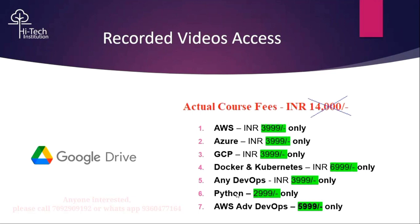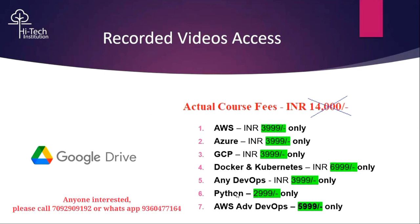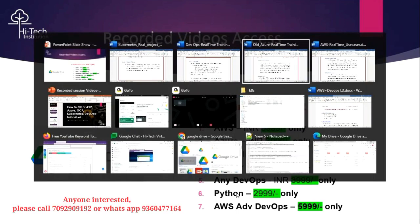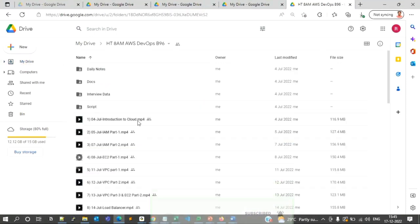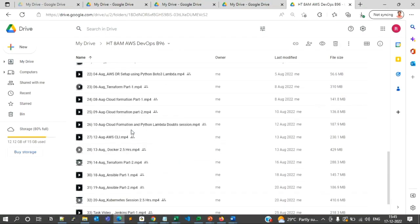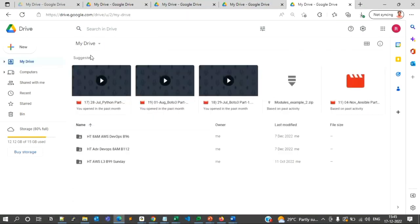I already have previous recording batches for all this content. Many of you watching also know we conduct training. I often get calls from YouTube viewers saying the timing doesn't work — morning is office time, evening they pick up kids from school. So I've come up with a good plan: all the videos are kept on Google Drive. When you open my Google Drive, you'll find my Batch 96 AWS DevOps content — A to Z content already done, including scripted interview data, documents, and daily notes, all bundled and readily available.